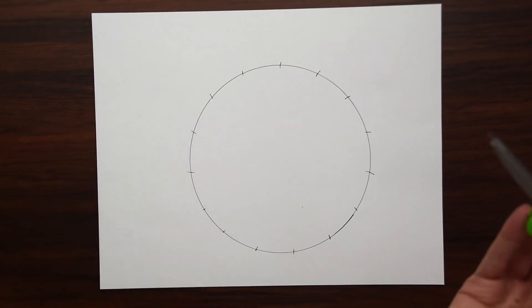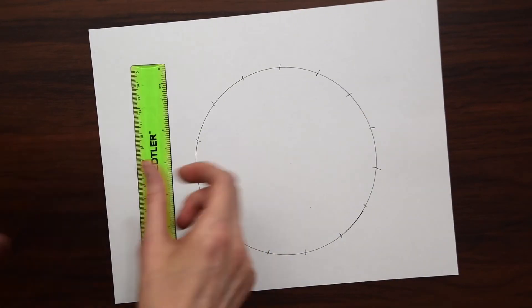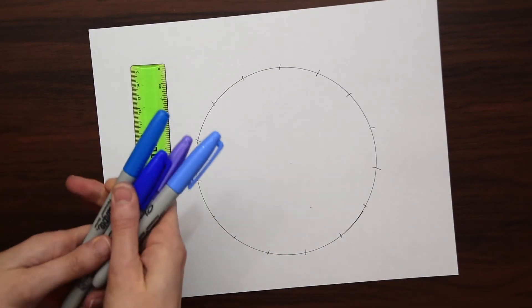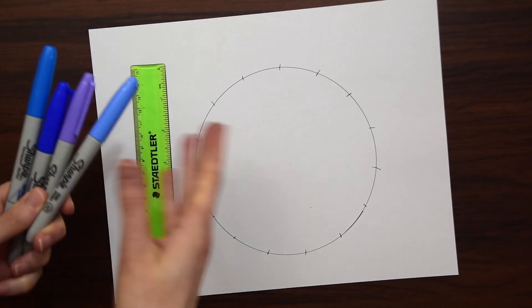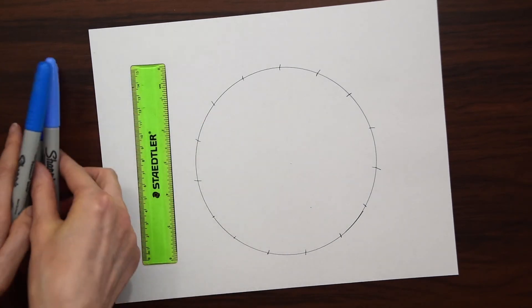We have our markings and they're all evenly spaced, and now we can actually start drawing some lines for the spirograph. I'm going to use different colors for this, going for a monochromatic look from blue to a little bit of purple.